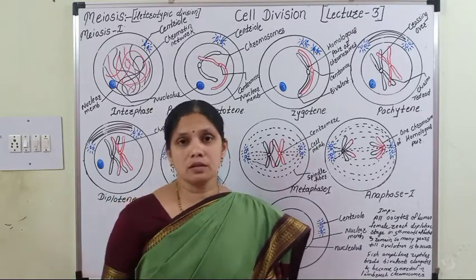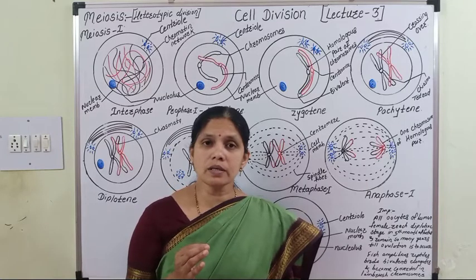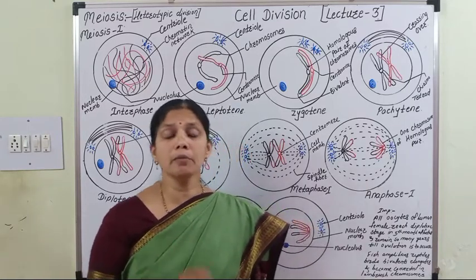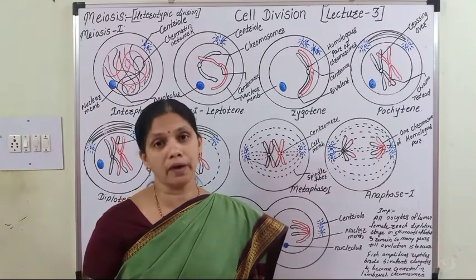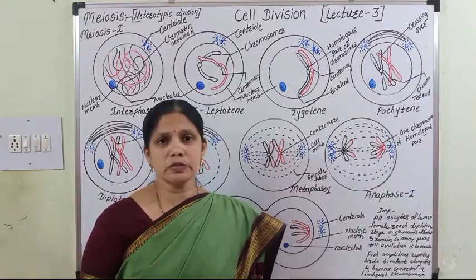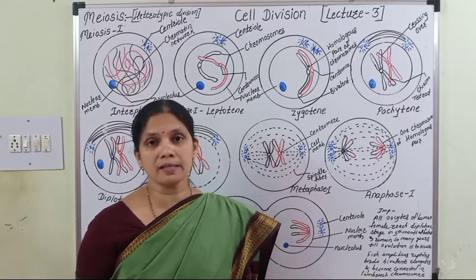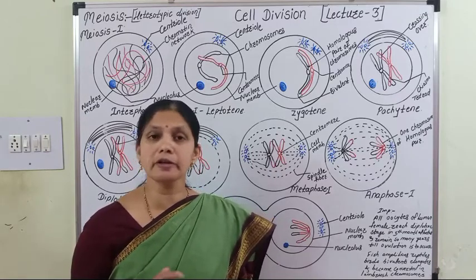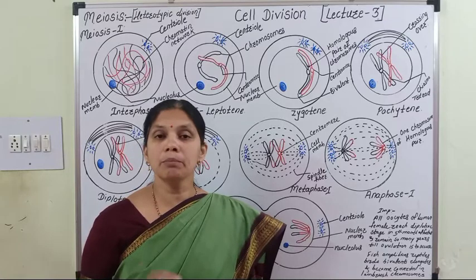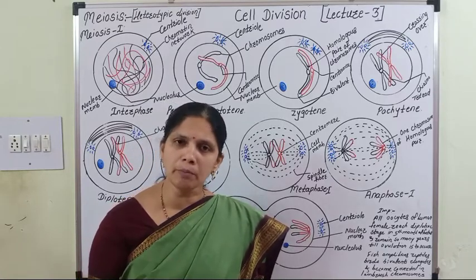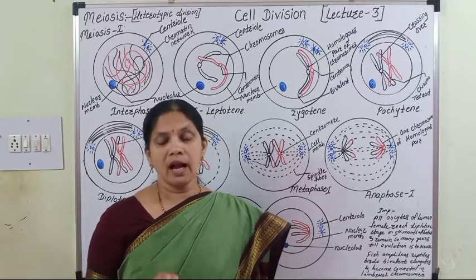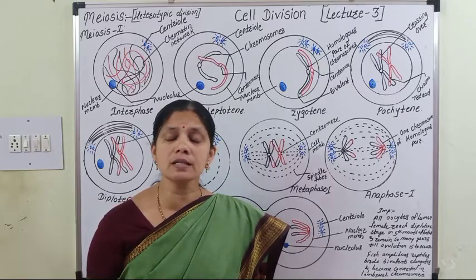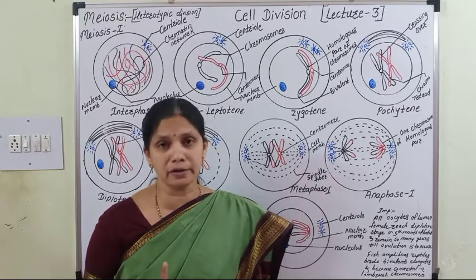Now, meiosis. The word meiosis was introduced by the scientist Farmer in 1905. Meiosis is also known as reductional cell division because the chromosome number is reduced to half. At the end of meiosis, four daughter cells are formed from one parental cell.